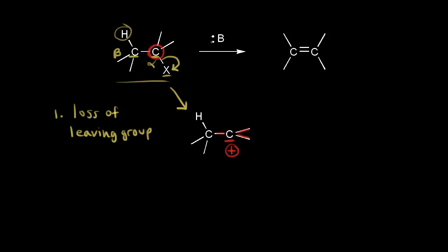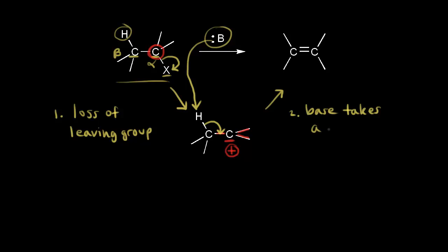In the second step, our base comes along and takes this proton, which leaves the electrons behind. Those electrons move in to form our alkene. This is the second step of the mechanism: the base abstracts a proton to form our alkene. The electrons in magenta moved in to form our double bond, and we form our product — our alkene.